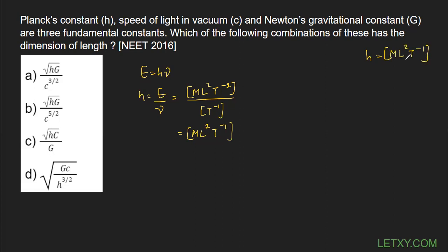The next one is the speed of light in vacuum. Speed of light is simply a speed, and it has the dimensional formula M⁰L¹T⁻¹. This is the easiest one to remember.